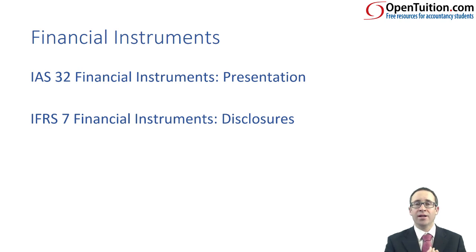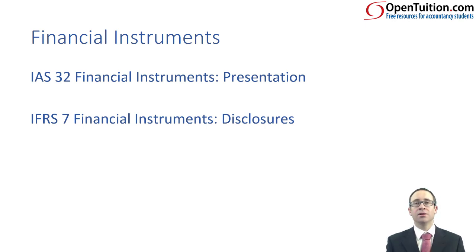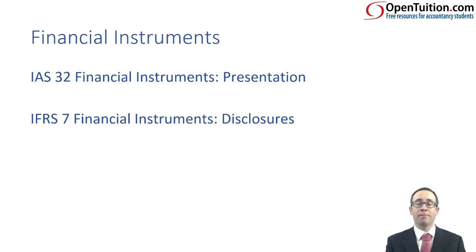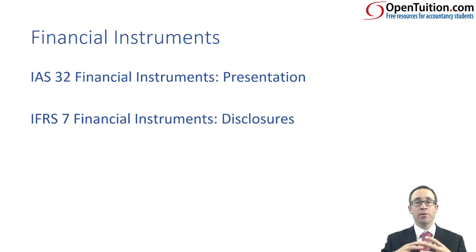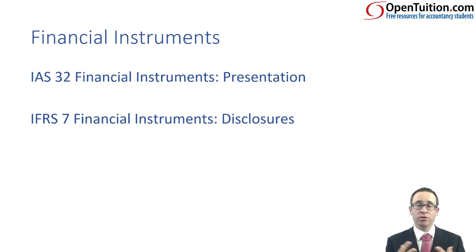Thinking back to the financial crisis, a lot of the banks had these huge mortgage receivables. Those mortgage receivables were subject to considerable levels of risk, because people had borrowed beyond their means and were very unlikely to pay that borrowing back. There was no disclosure with regards to the level of risk within the financial statements. So we've adopted IFRS 7, which goes through and gives you additional disclosure about the risk we are faced with regarding financial assets and financial liabilities.